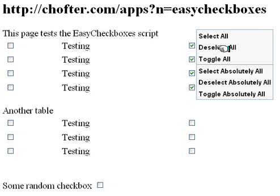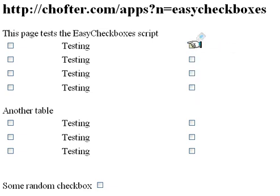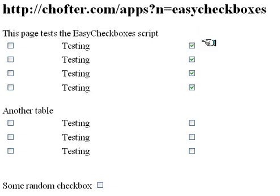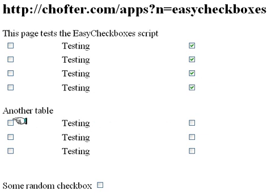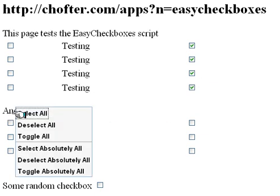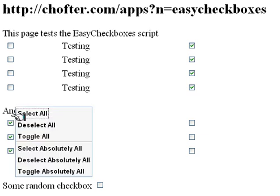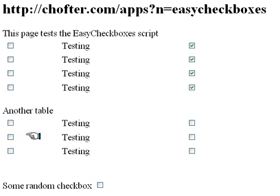So here if we do Deselect All or Select All, only the four checkboxes on the top right are actually affected, none of the others are. Similarly, if we go down to the bottom left three and say Select All or Toggle All, only the bottom three are affected.